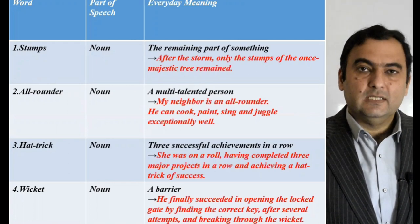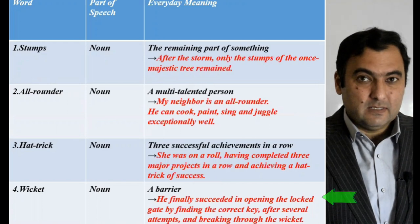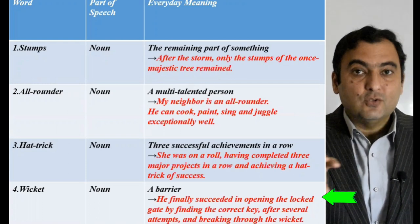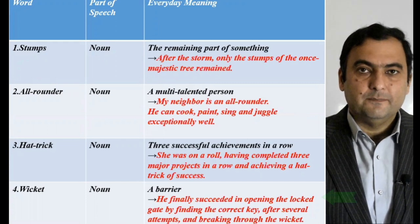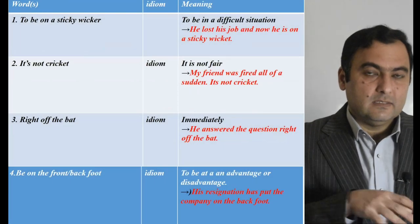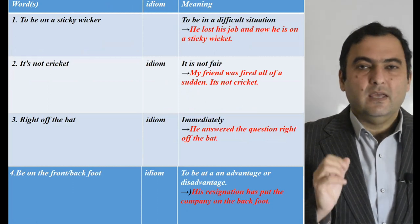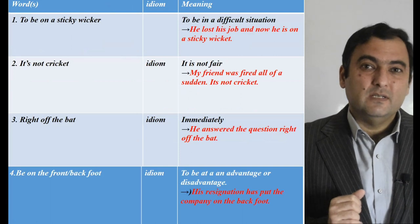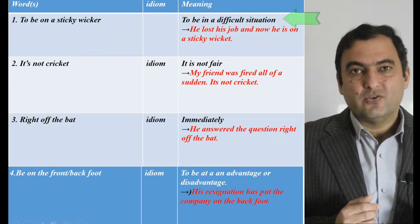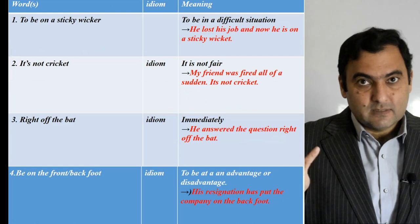The next noun is wicket. In day-to-day conversation, wicket means a barrier. An example sentence: he finally succeeded in opening the locked gate by finding the correct key after several attempts, breaking through the wickets — whatever barriers he faced, he overcame them. Now, the first idiom: to be on a sticky wicket means to be in a difficult situation, to be in trouble. For example: he lost his job and now he's on a sticky wicket.